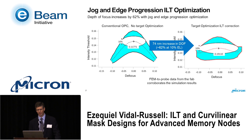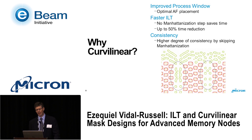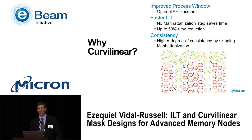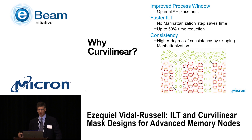Beyond retargeting jogs as curves to improve process window, what else does curvilinear bring to the table? First, on the assist feature side, fewer constraints on the solution provide improved process window. ILT naturally wants to create curvilinear shapes, so if you don't constrain it to Manhattan shapes you end up with a better solution overall. Second is speed of computation: the ILT field is curvilinear by nature, so having to Manhattanize shapes for mask making adds complexity. We can save up to 50% of runtime by skipping that step.